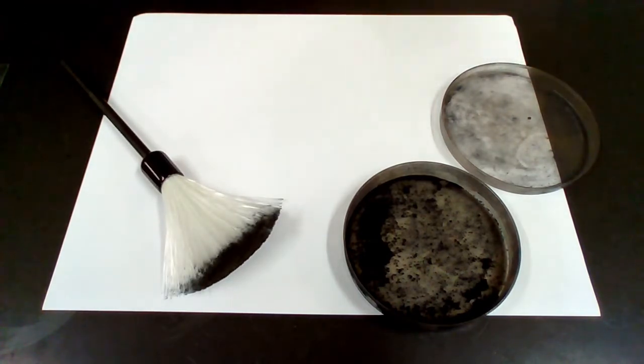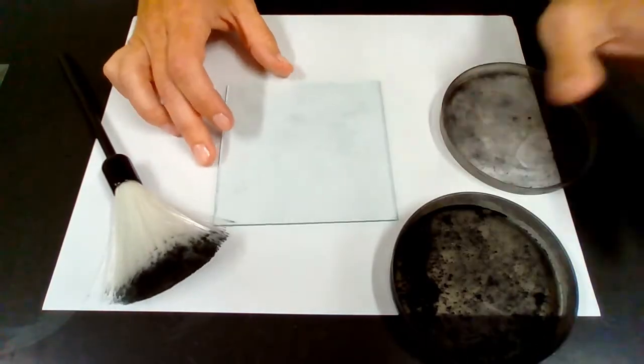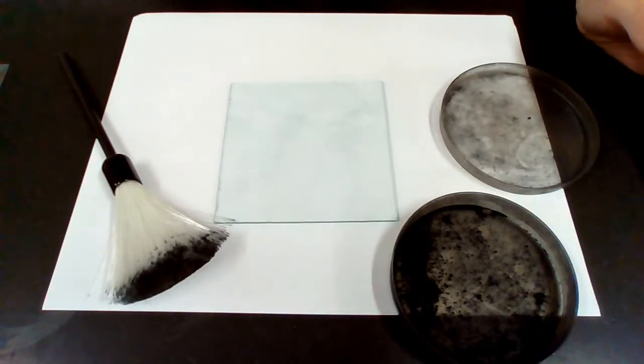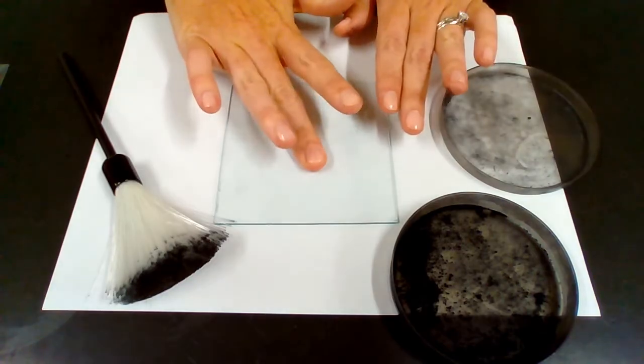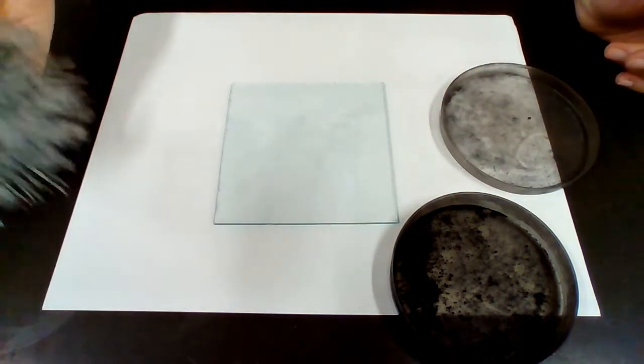I'm going to start with a piece of glass just to show you how this might work. On the glass, I'm going to press my finger to make sure there's a fingerprint there for us to check on.